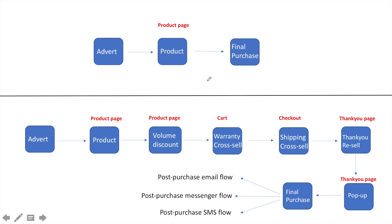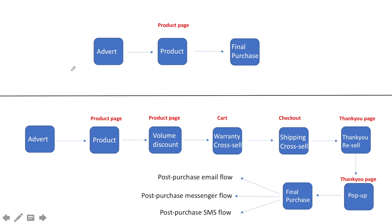Here's what most people do when testing a product: they run an ad, send traffic to the product page, and that's it — no upsells, no cross-sells, no funnel. This is very limiting in terms of profitability. If you're selling a product for $30 that costs $10 on AliExpress, you only have a $20 profit margin to acquire the customer, meaning you need to acquire them for $10–15 just to make a small profit.